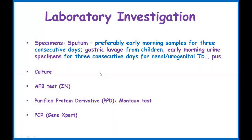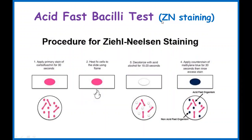Many laboratory tests have been developed for Mycobacterium, as diseases like TB have been described for a long time. The primary specimen needed is sputum — typically three samples are collected. For children, gastric lavage is performed. Pus and urine samples can also be used. These samples can be cultured, tested using the acid-fast bacilli (AFB) Ziehl-Neelsen stain, or a Mantoux test — a purified protein derivative (PPD) tuberculin skin test — can be performed.